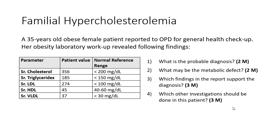Which other investigations should be done? To evaluate obesity, thyroid function test should be done — hypothyroidism causes obesity. Liver function test should be done. Diabetes investigations: blood glucose, serum insulin, HbA1c, as obesity may be associated with diabetes. Since the patient is female and in the reproductive age group (35 years), screening for PCOS should also be considered. Metabolic syndrome workup is also indicated.